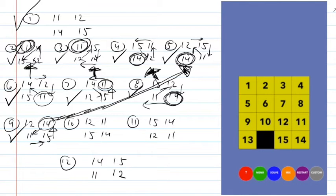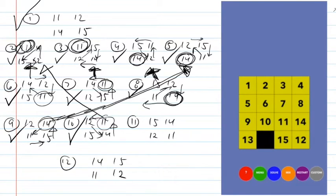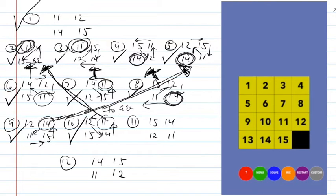In case ten, neither the eleven nor the fourteen is in the right spot, but they're both on the right edge. I have a choice: I could get either one into its spot. I'll choose to put the eleven into its right spot. With the eleven placed, it's turned into case five. I move the eleven over, cycle the twelve, fourteen, and fifteen counterclockwise, and that does it for case ten.